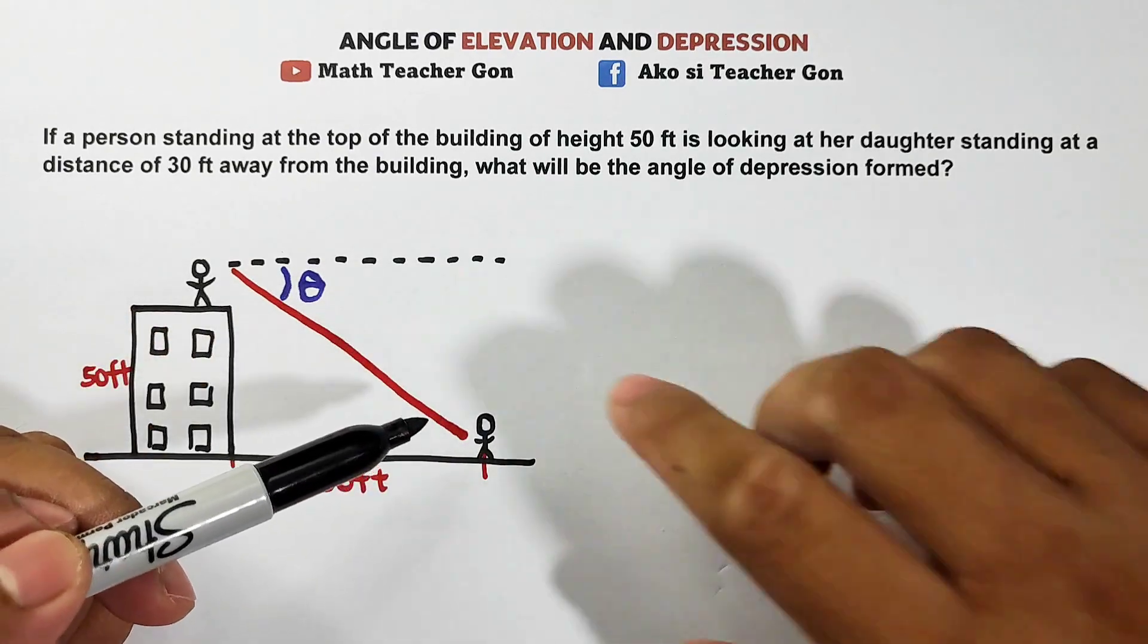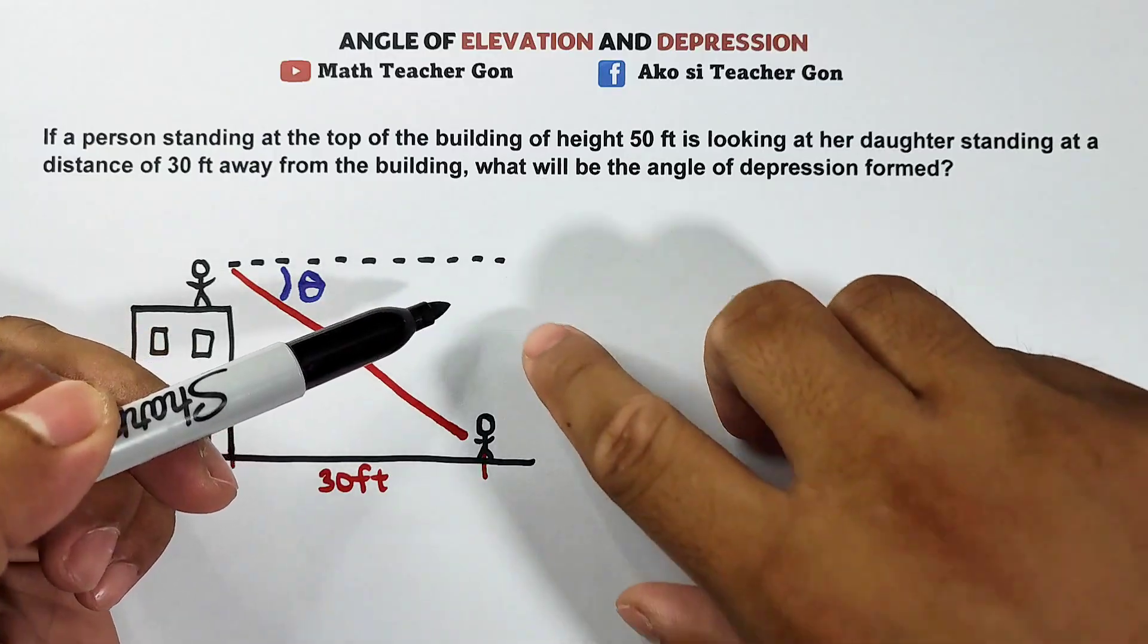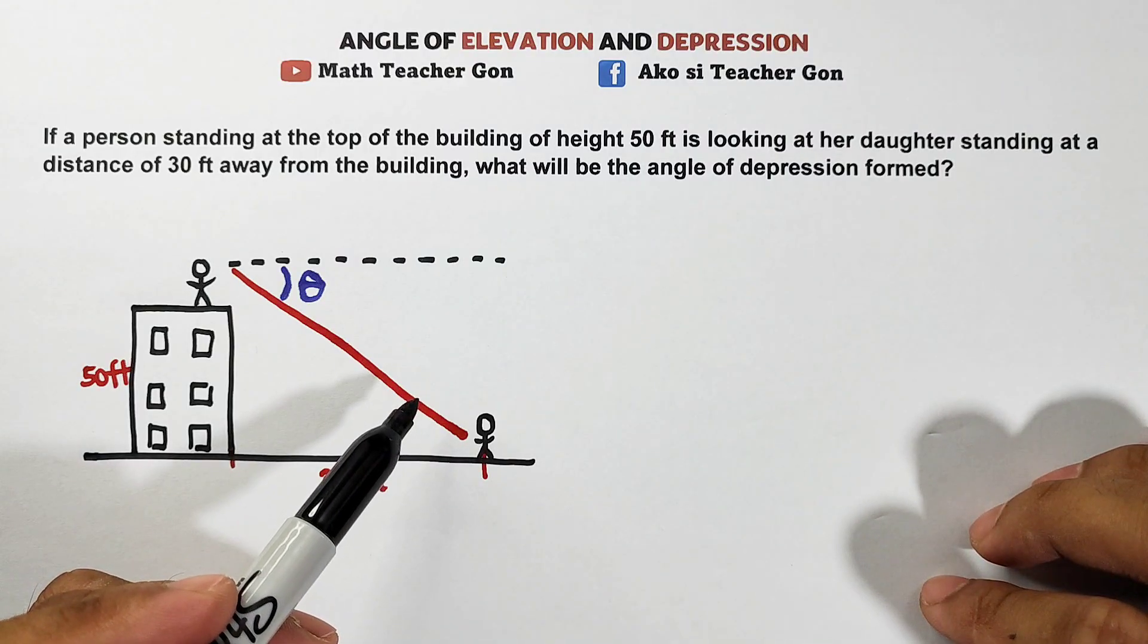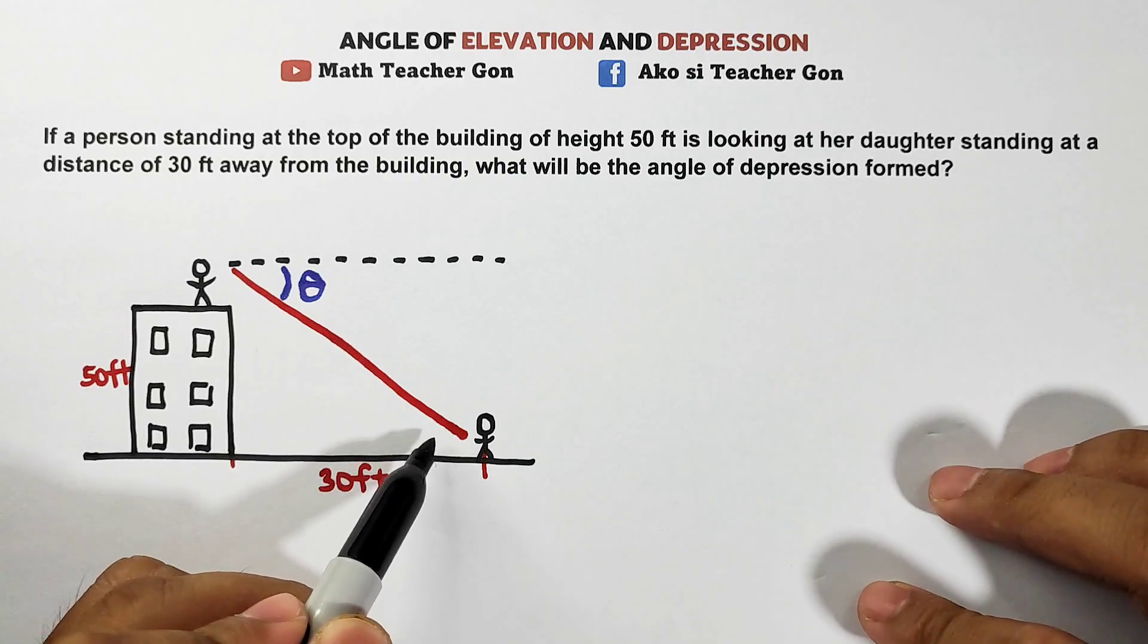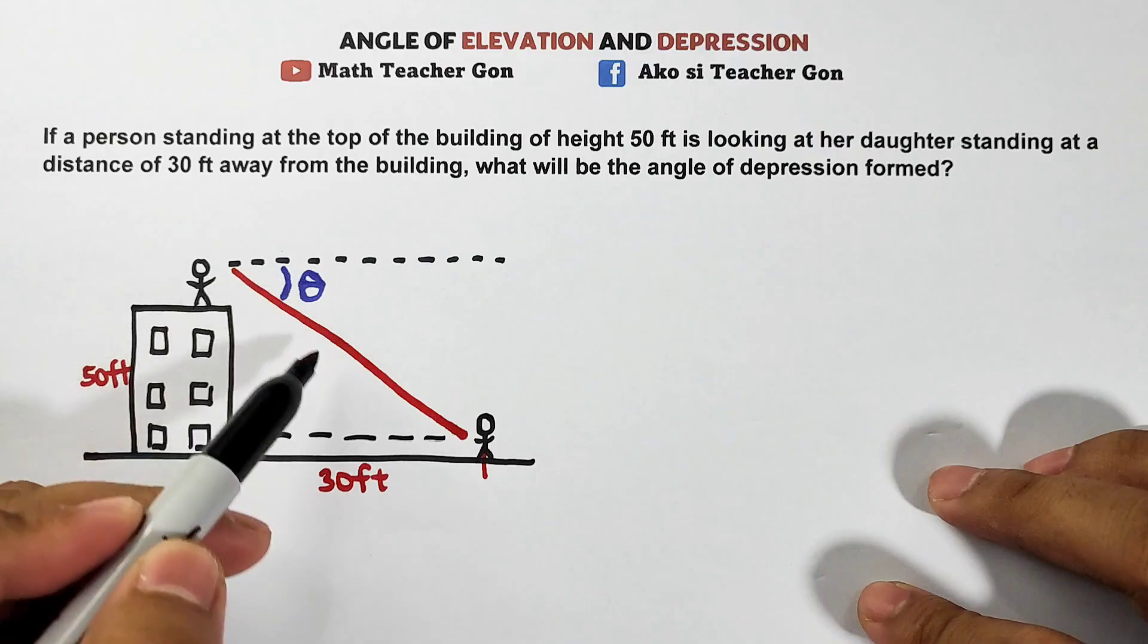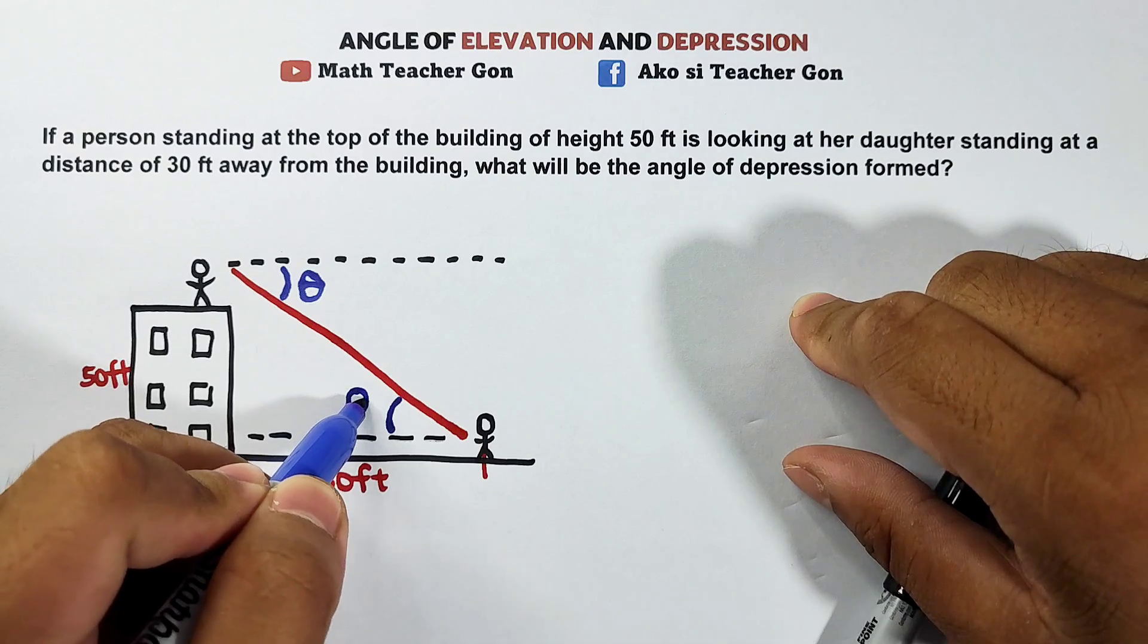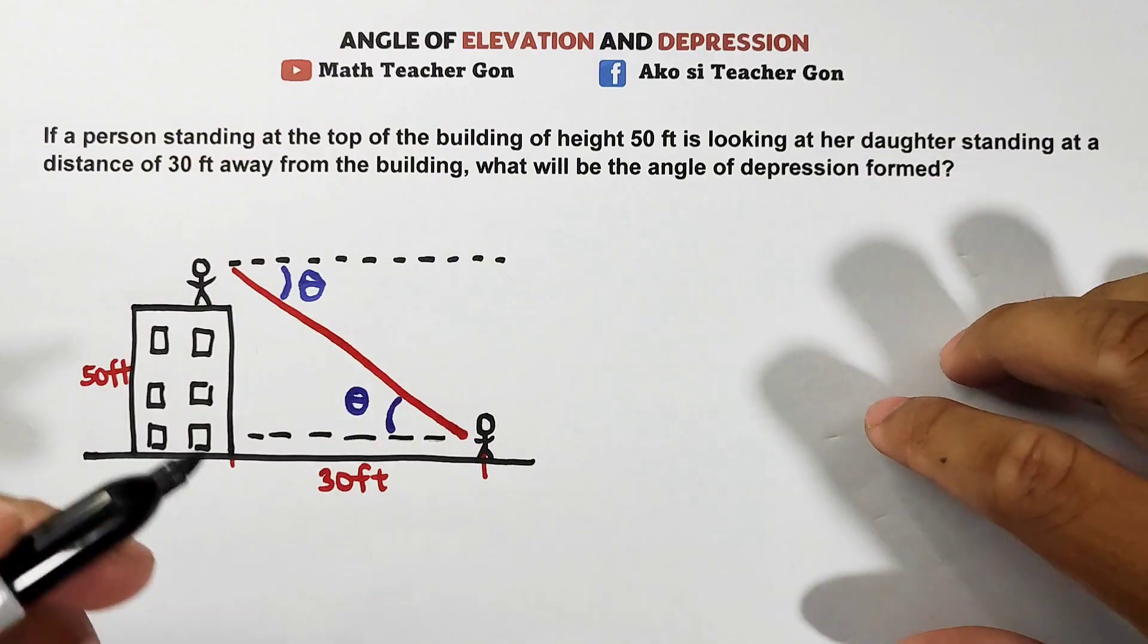When we draw a right angle here, we don't have a given length here. We don't have a hypotenuse either. So we'll use a different concept. Here we can use the concept about transversals. This angle and this angle are considered equal because they are alternate interior angles in the concept of transversals. So now we can form a right triangle.